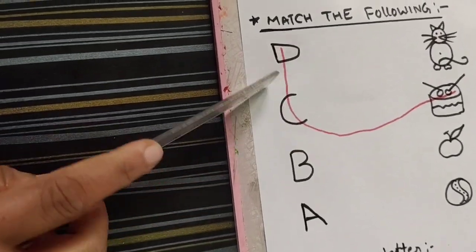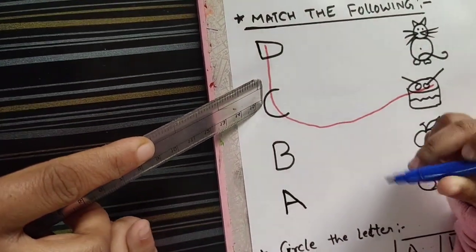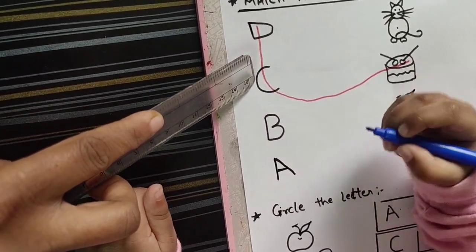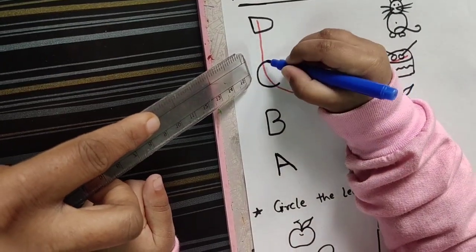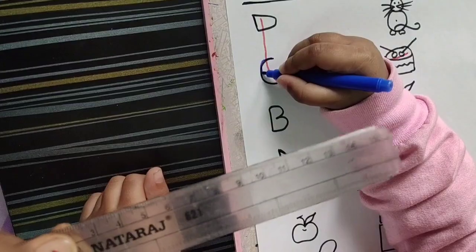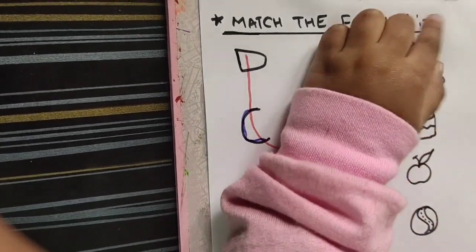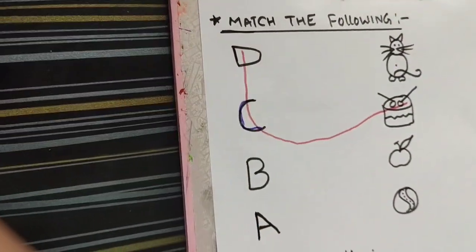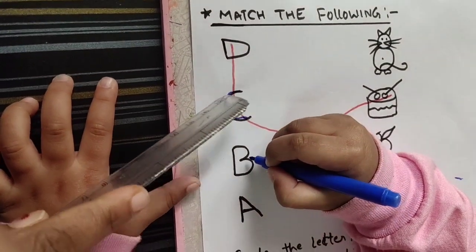Very good. Which letter is this? This is? K? Letter? C. C for? Cat. Match it. C, C, C, C.